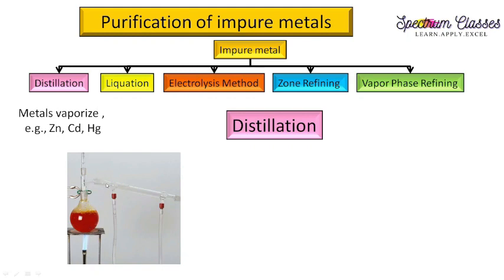The vapors reach the condenser, which has two portions: an inside tube and an outside jacket. Cold water enters through an inlet in the outer jacket and exits through an outlet. This cold water cools down the vapors, which get condensed, and we collect the purified solvent on this side.